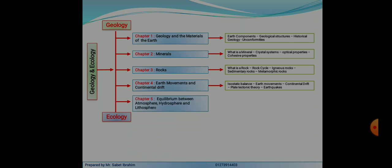In Chapter 5, we are going to explain the Equilibrium between Atmosphere, Hydrosphere and Lithosphere, especially weathering: mechanical weathering, chemical weathering, wind, rain, torrents, rivers, underground water, seas and oceans, lakes, and soil.